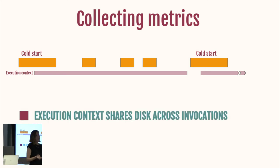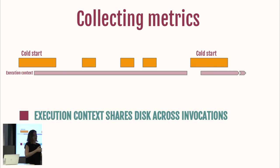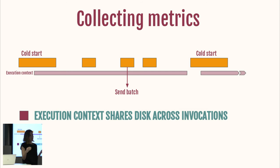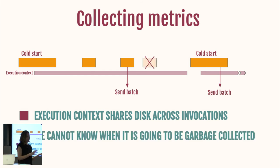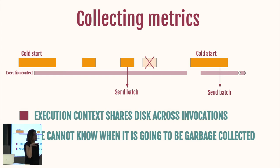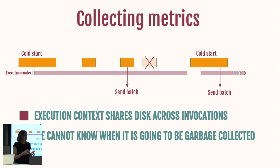One good thing about execution contexts is that disk is kept through invocations — an optimization that clouds provide. So we could keep metrics on disk and send them in batches. Problem: it's a black box, and we don't know when those things are going to be garbage collected. You can't trust that the execution context will be there for the next invocation. So if you do it this way, you risk losing data. Depending on your use case it may be okay — but in general, it's not.